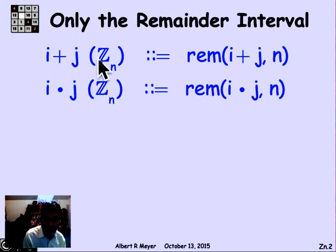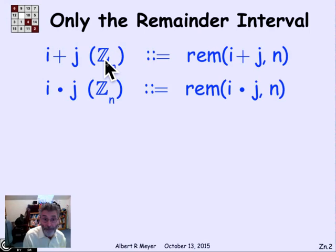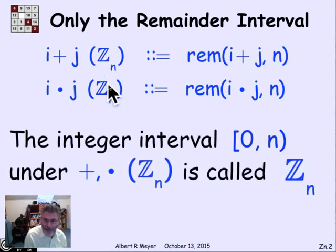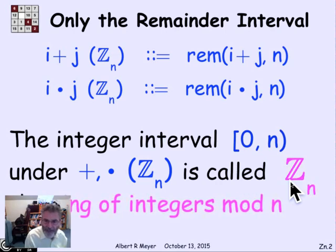When you add i and j in Z_n, it's an element in Z_n. And this structure consisting of those intervals, the integers in that remainder interval, the integers from 0 to n, including 0, not including n, under the two operations of plus and times in Z_n, Z_n is called Z_n. I guess we could have guessed that. It's also known as the ring of integers modulo n.